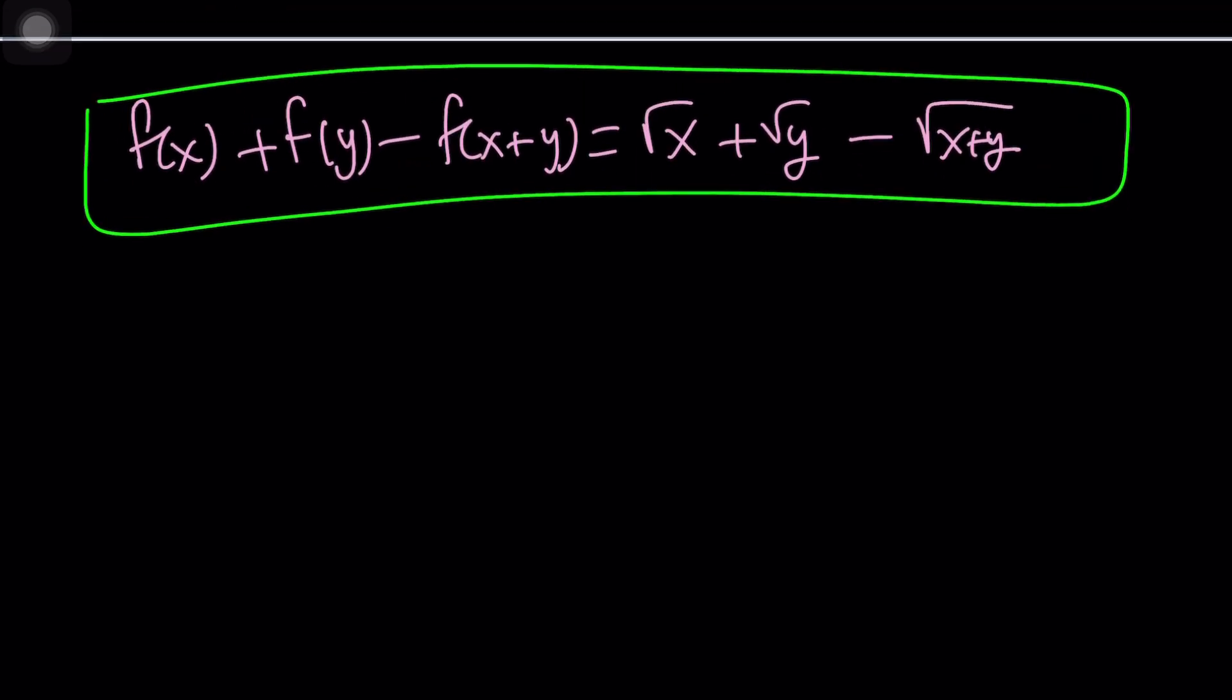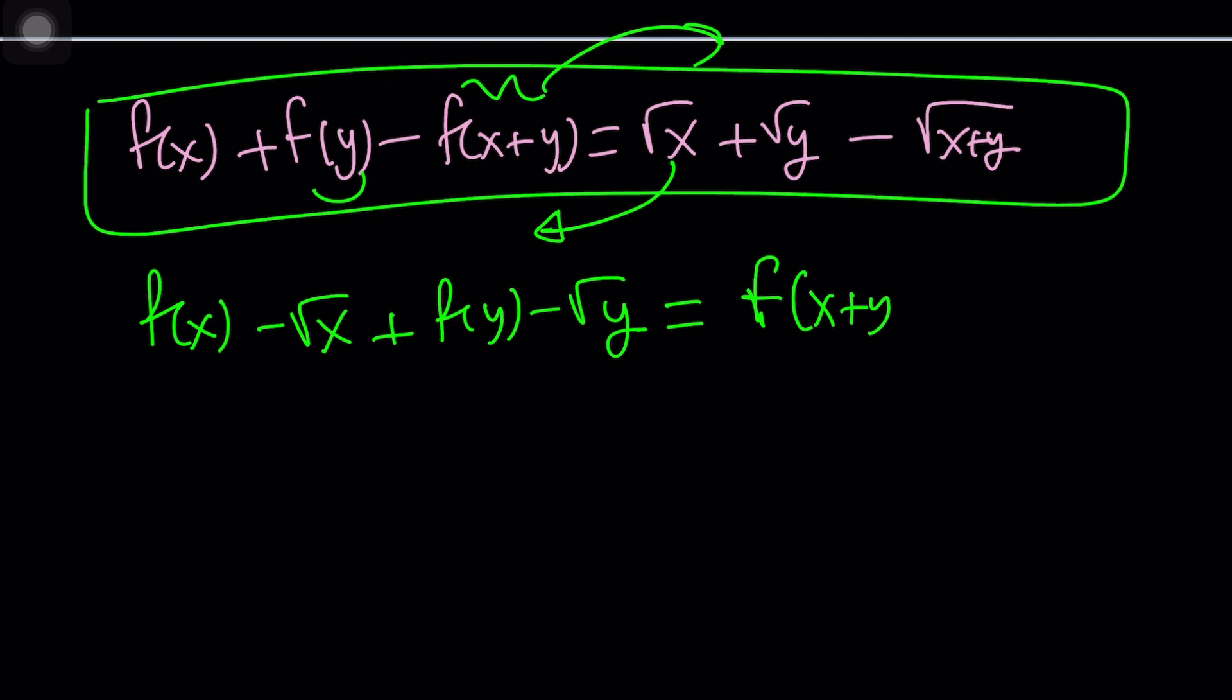Here's what we're going to do. We're going to subtract square root of x, and then we're going to subtract square root of y, and then we're going to add this on the right-hand side. The reason being, we want to have the variables, the compatible variables together, like x with x, y with y. You see what I'm talking about? Let me show you. x with x, y with y, and x plus y with x plus y. You get the idea? Yeah, so that's the whole purpose.